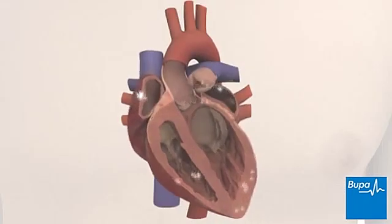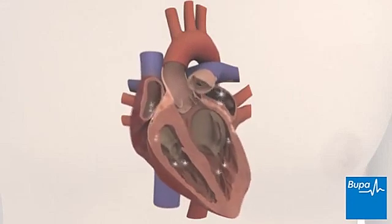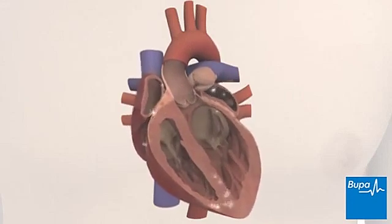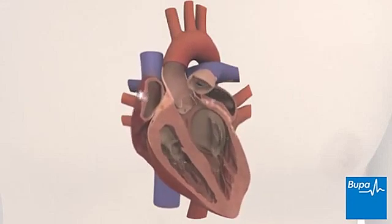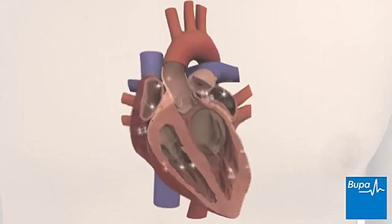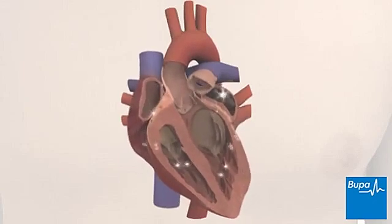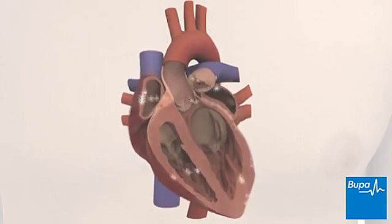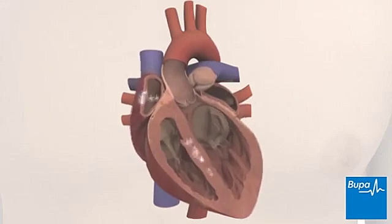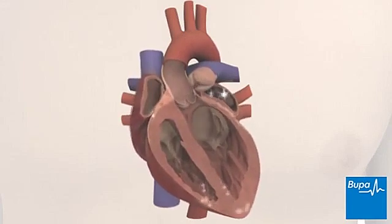In atrial fibrillation, the electrical impulses in the atria become disorganised, overriding the heart's normal rate and rhythm. This causes the atria to quiver or fibrillate.